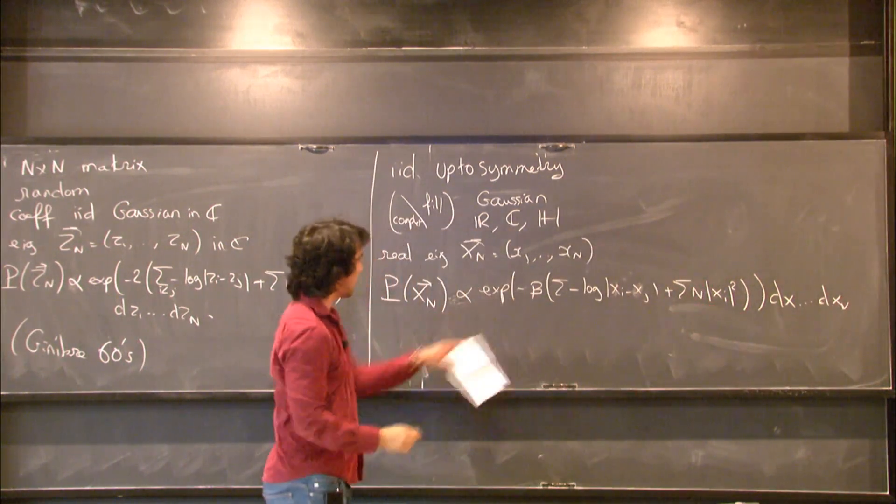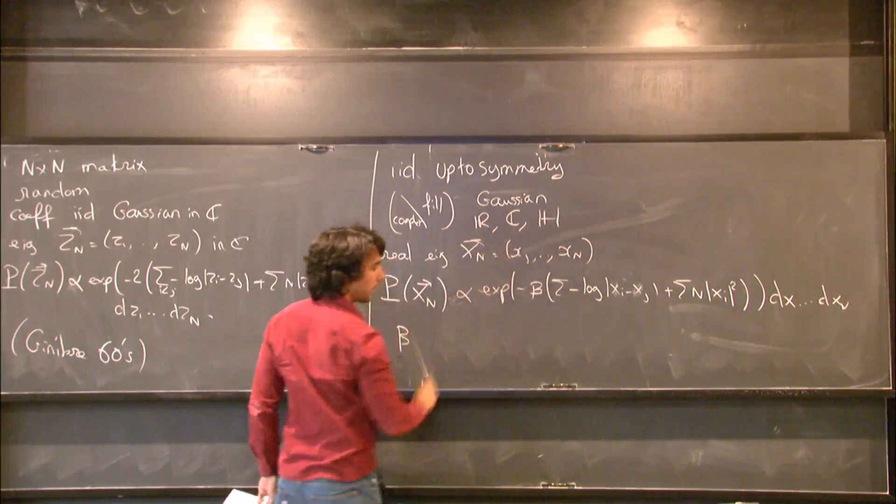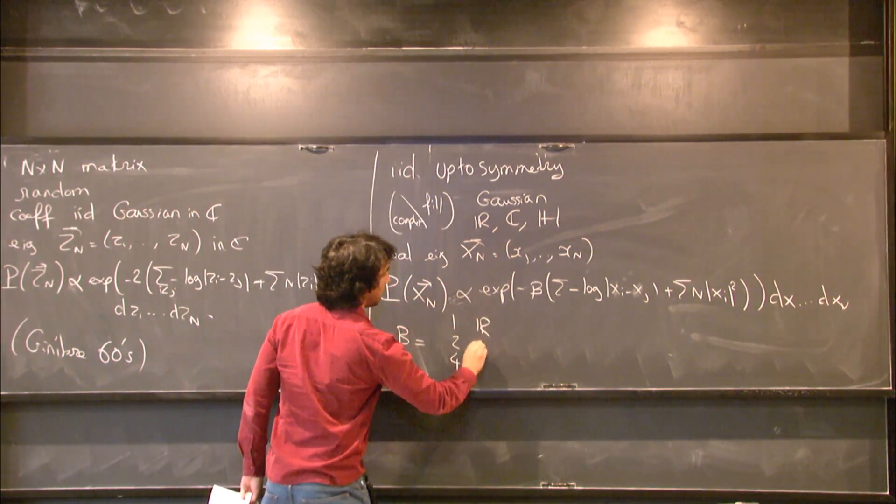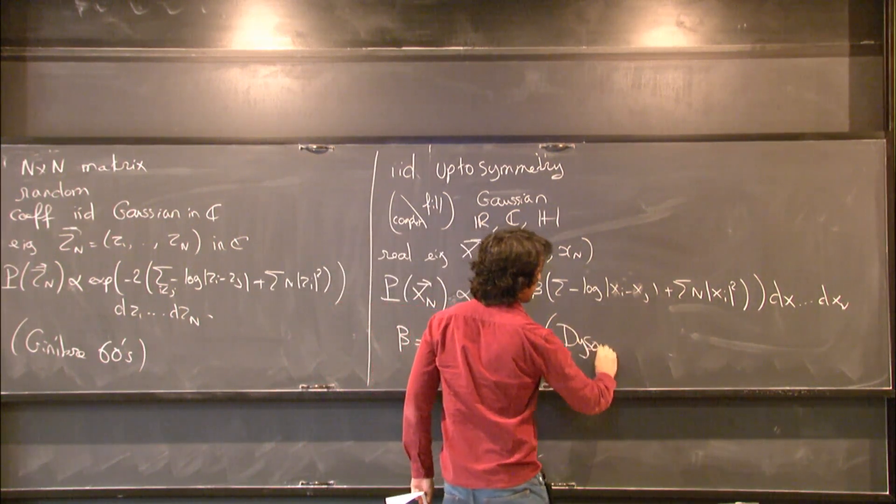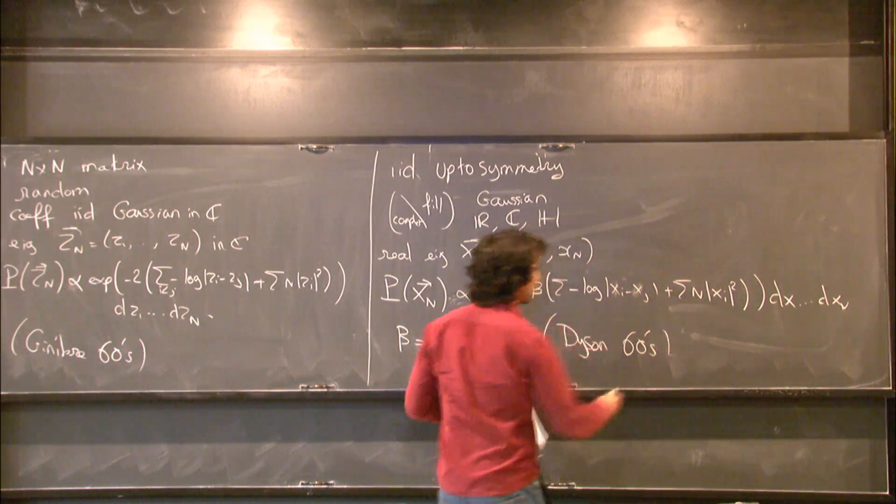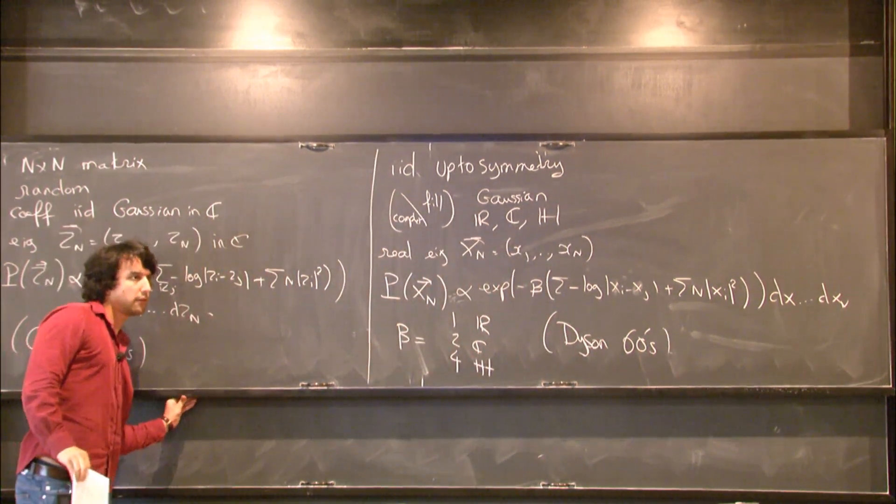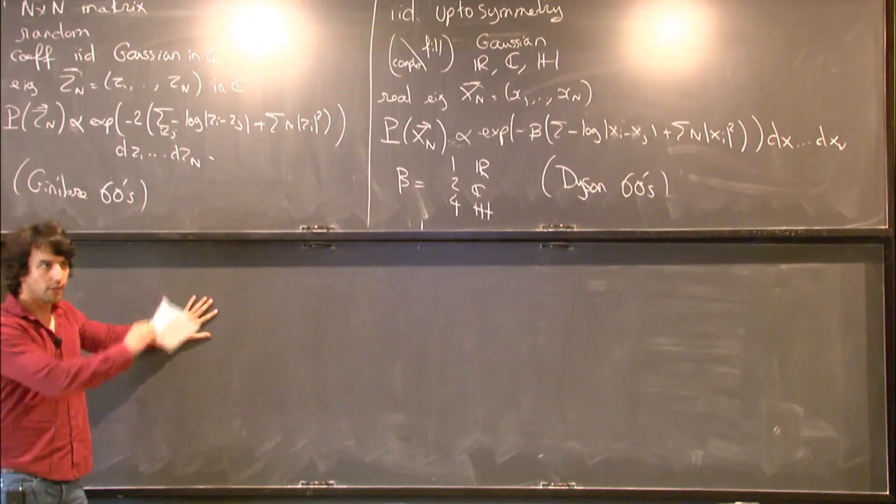And what is beta? Well, beta depends on whether you've chosen your Gaussian to be real, complex, or quaternionic. And it's one, two, or four, depending on your choice. Here again, I'm not sure who was the first person to do this computation, but there is a wonderful series of papers by Dyson in the 60s, the statistical theory of energy levels, where he does that and much more.